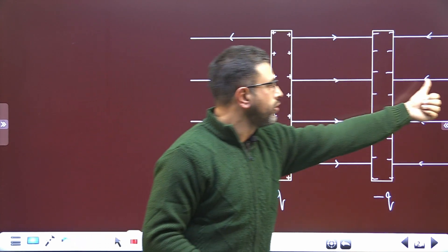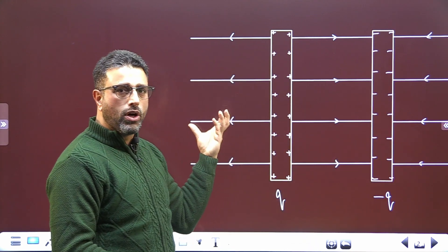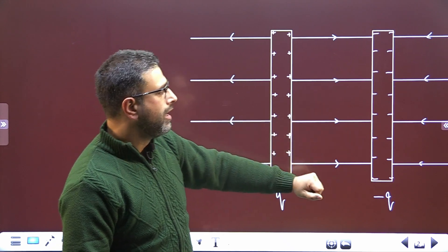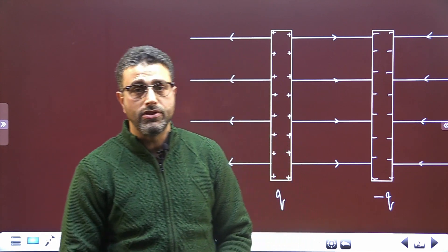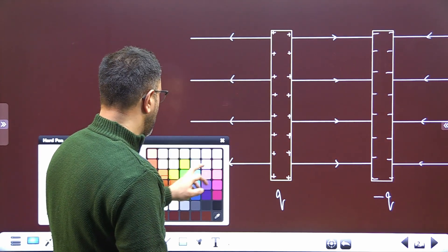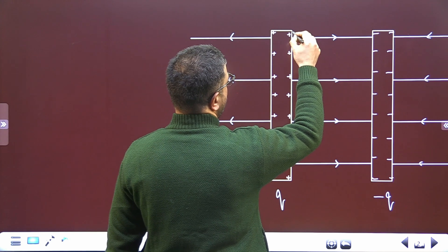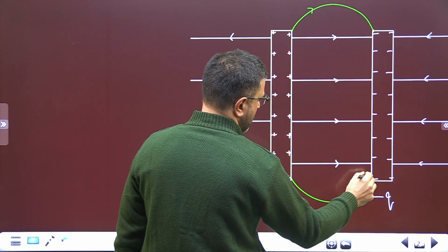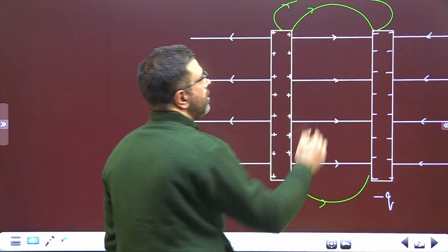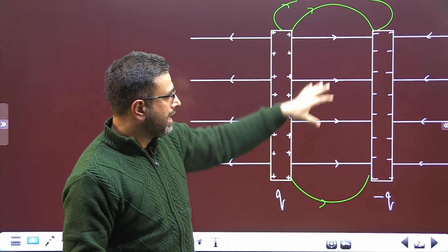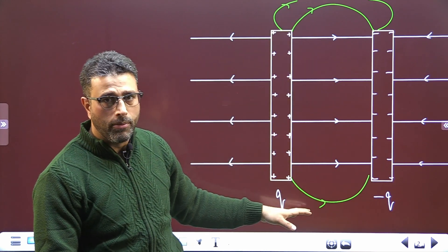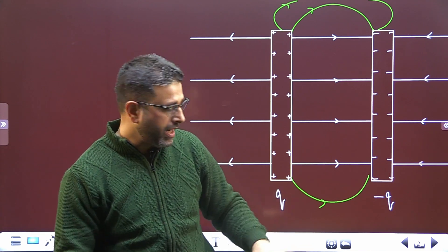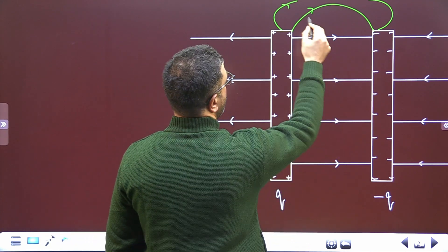Away from the positive on this side, towards the negative on this side. We don't know the exact magnitude yet. One important thing we are asked to neglect is fringing, also called the edge effect. Field lines near the edges are not straight — they are not parallel like the ones in the middle. That part, where the field is highly non-uniform, is to be neglected. We will only consider the uniform field lines in the interior region.